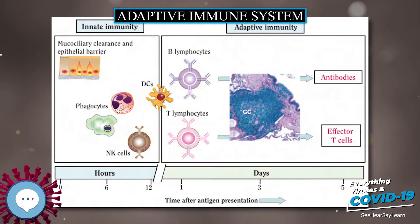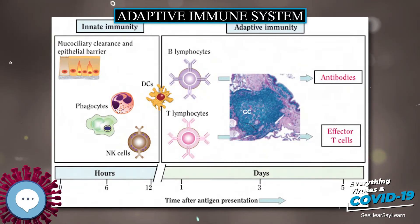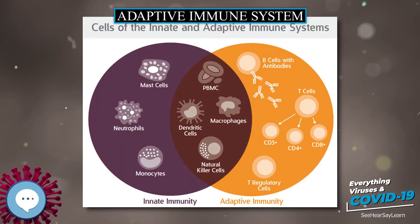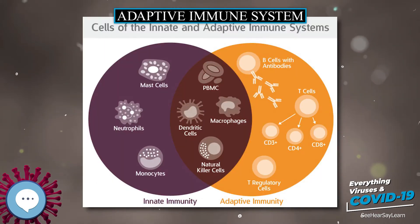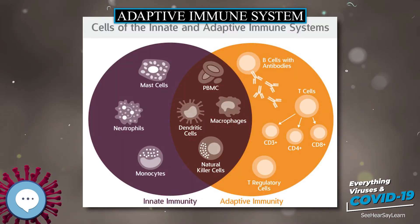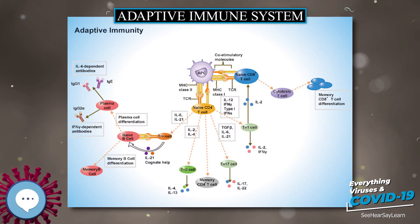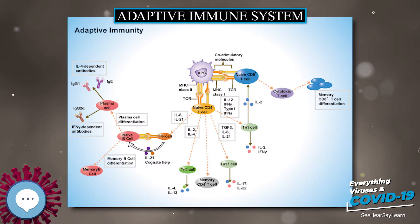In antibody responses, B cells are activated to secrete antibodies, which are proteins also known as immunoglobulins. Antibodies travel through the bloodstream and bind to the foreign antigen, causing it to inactivate, which does not allow the antigen to bind to the host.